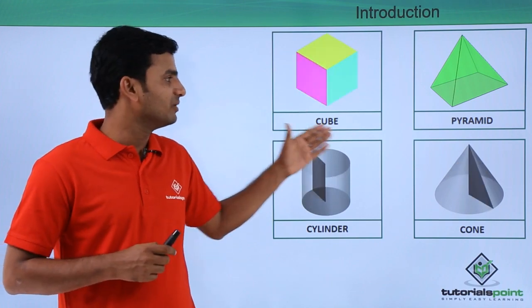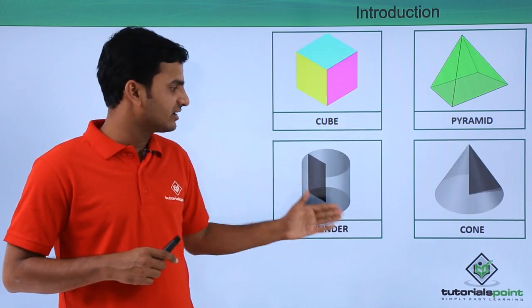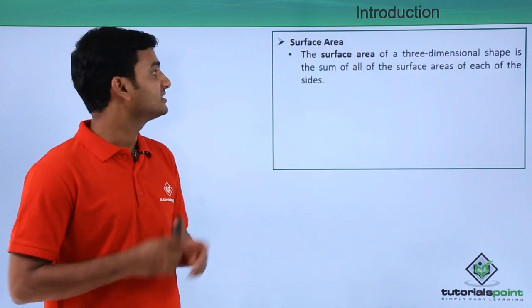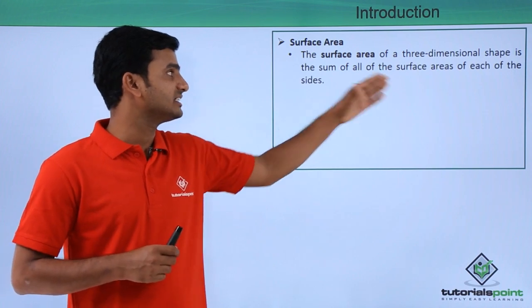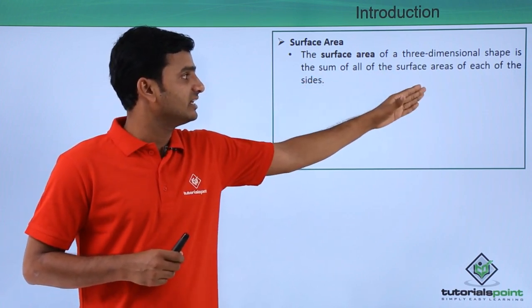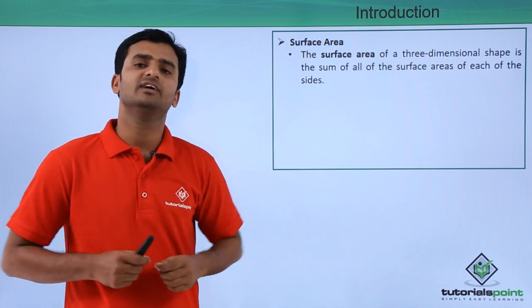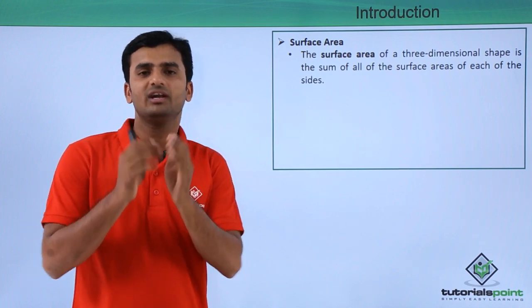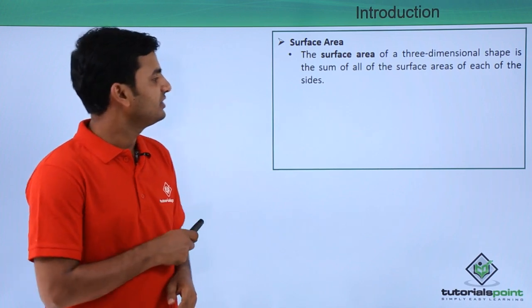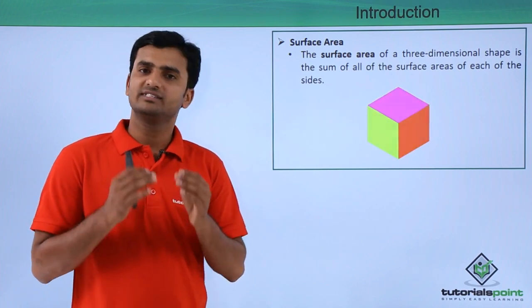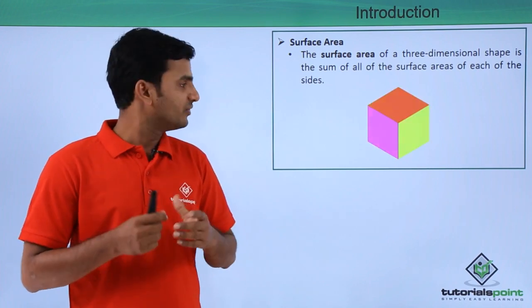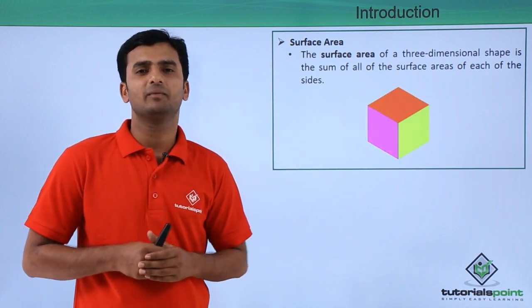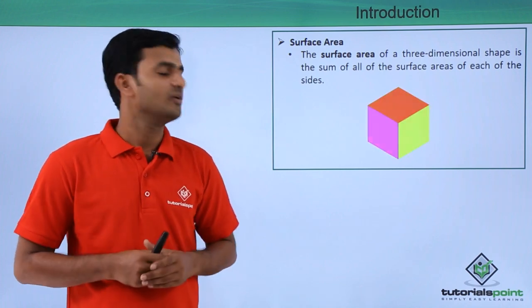First of all, let's understand what is surface area. The surface area of a three-dimensional shape is the sum of all the surface areas of each of the sides. It means that while calculating surface area we are concerned about only the outer layer of the object. For example, if you take a cube, if you want to find out surface area of the cube, first we have to find out the area of each of the sides, then we have to combine them. That will become the surface area of the cube. It means that we are not considering the inner portion of the cube.